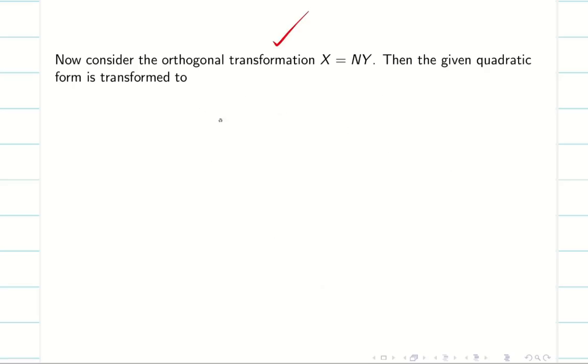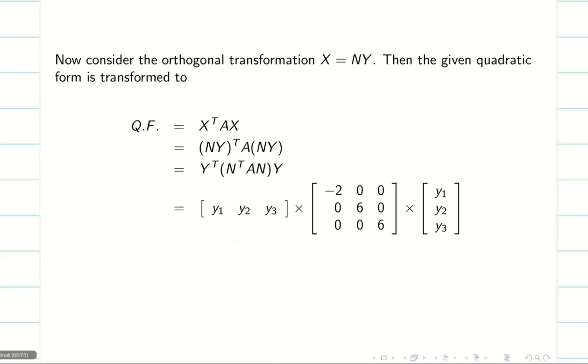And due to the property orthogonal transformation, the x can be represented as ny, where n is the normalized modal matrix. And I am going to assume y as y1, y2, y3. Now we know the quadratic form is x transpose ax. Substitute x equal to ny. And we know ab old transpose is b transpose a transpose. Substituting the result, we know this is going to be my diagonal matrix D. So I can directly write this as y transpose dy. Simplifying this, we will write directly minus 2y1 square, 6y2 square and 6y3 square. This is my canonical form.